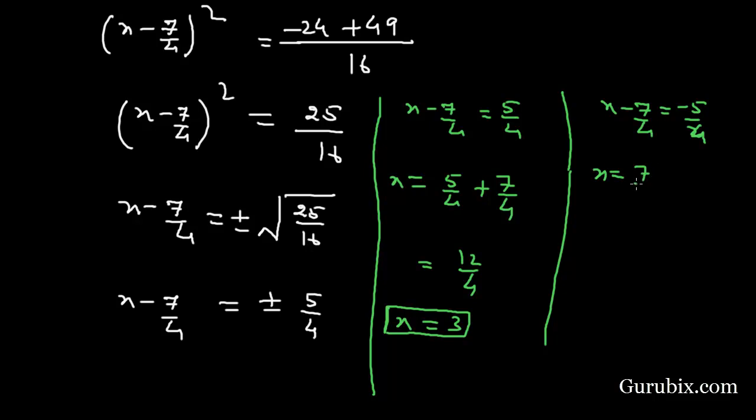Here we have x = 7/4 - 5/4, this means 2/4, this means 1/2. So this is the second root of the quadratic equation. This is the solution of the question. Thank you.